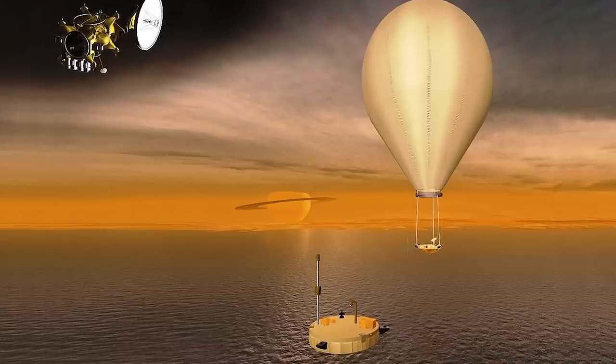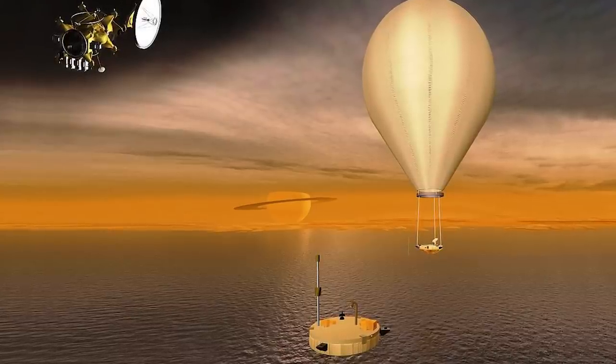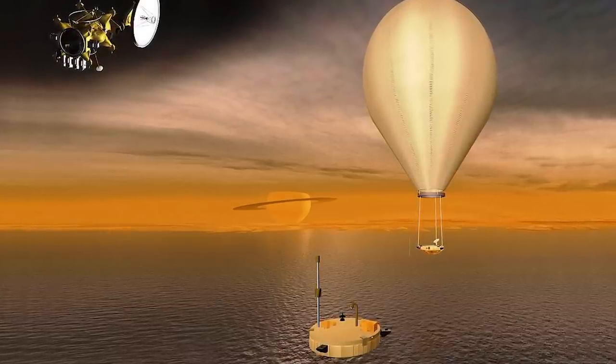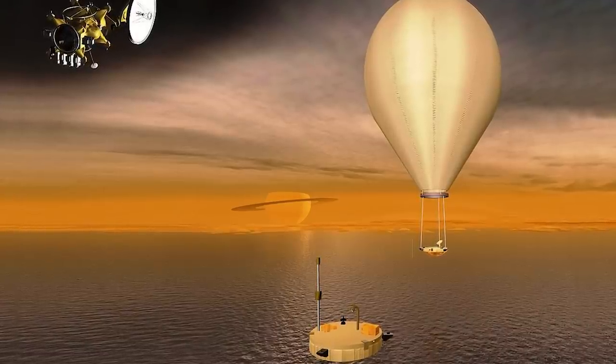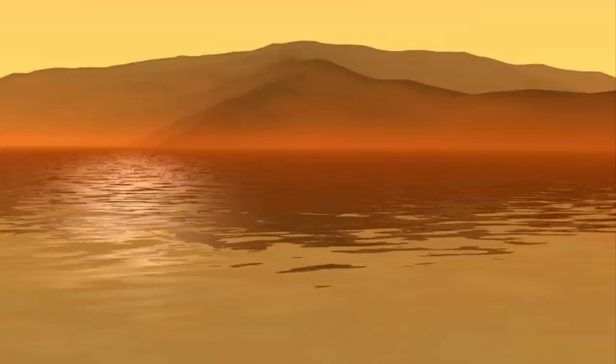Radar measurements indicate the average depth of Ontario Lacus is extremely shallow, ranging from 40 centimeters to 3 meters and a maximum depth of 7 meters, or about 23 feet.